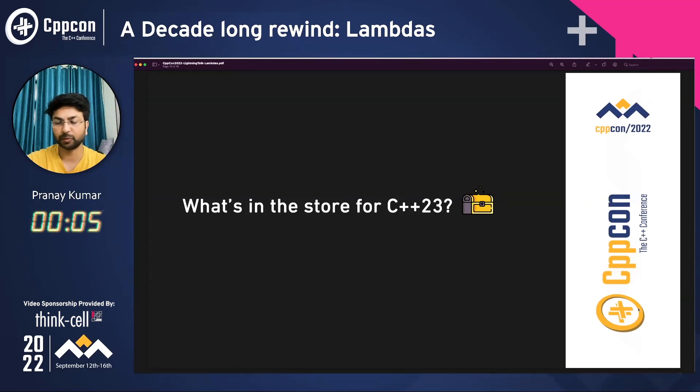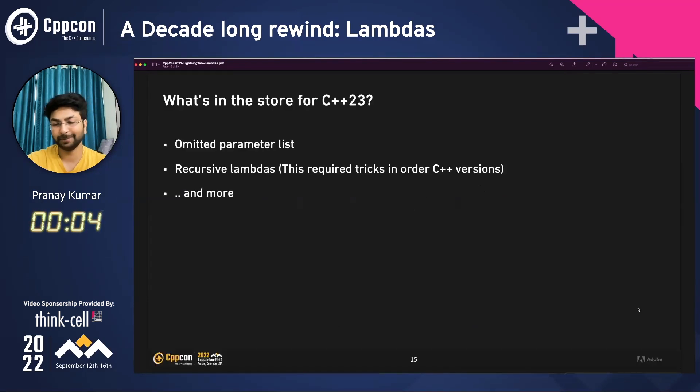What's in store for C++23? The parameter list could be omitted if possible. Then there's recursive... — though it seems somebody didn't get the memo about five-minute talks. But there we are. Thank you.